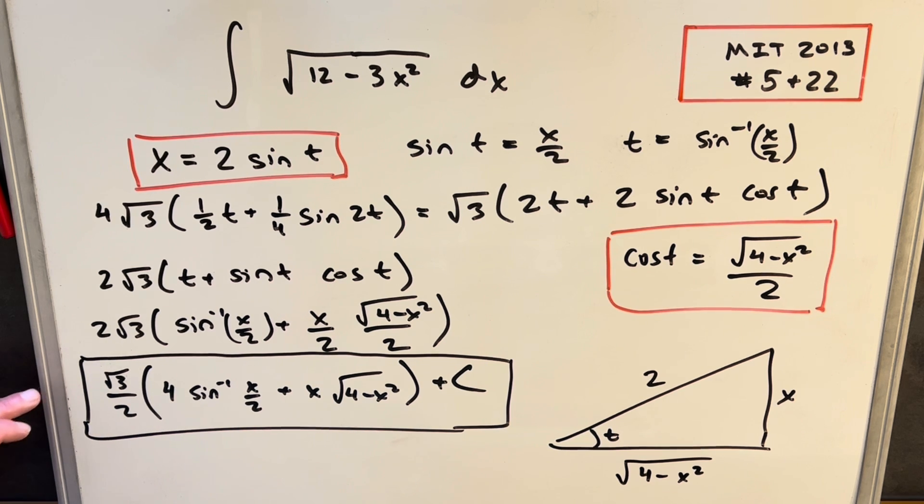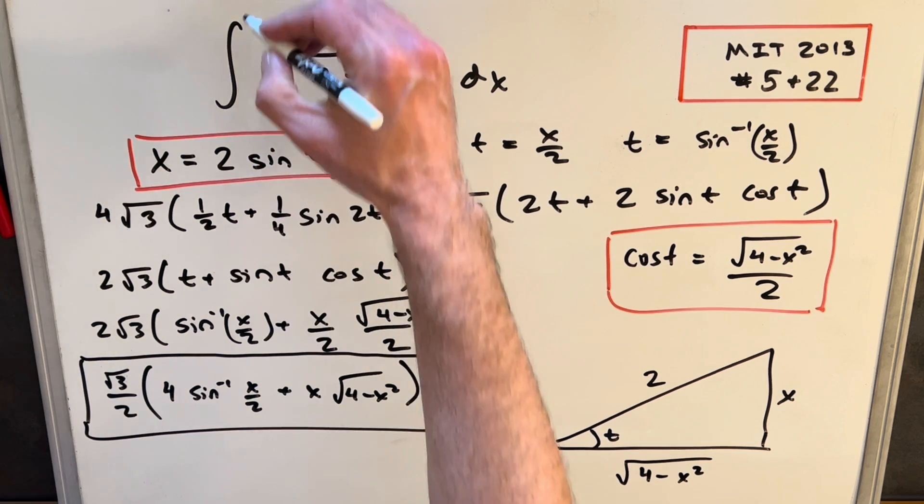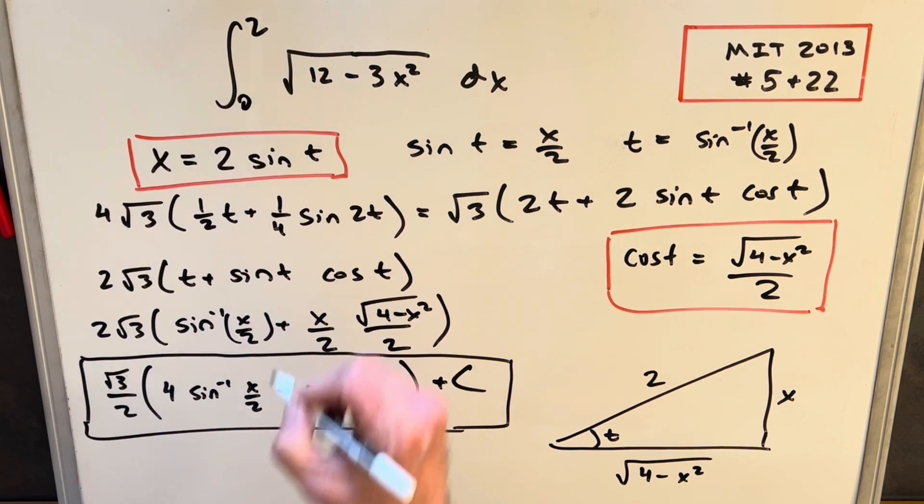Okay, so this will be our answer for our indefinite integral. That was problem 22. Now let's go back. Just to finish it off, we want to do problem 5. All we're doing is evaluating this from 0 to 2. So what I'm going to do is let's clean this up a little bit and evaluate it.